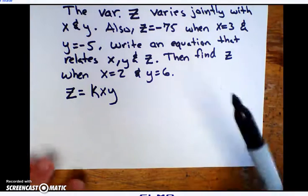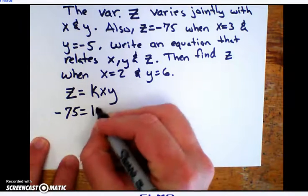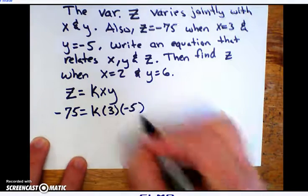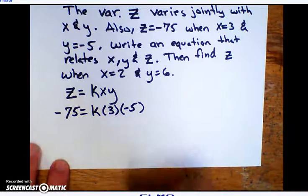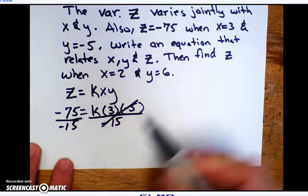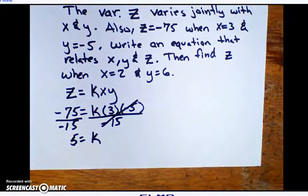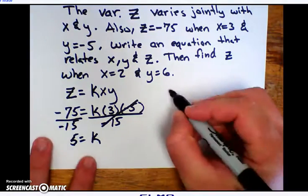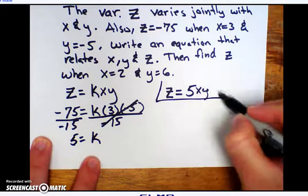Then we're going to do the same thing we did in the last question. We're going to plug in the values it gives us. It said z is negative 75 when x is 3 and when y is negative 5. And then they want us to write an equation. Well, we have to know what the k is, just like we did before. Well, what is 3 times negative 5? Negative 15. So I want to divide negative 15 to both sides. Negative 75 divided by negative 15 is a 5. So we've got what we need to write an equation. We've got the equation. We now know the k. So my equation is z equals 5 for my k, x, y. That is the first answer to my question.